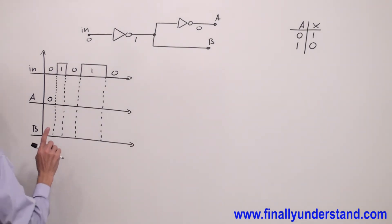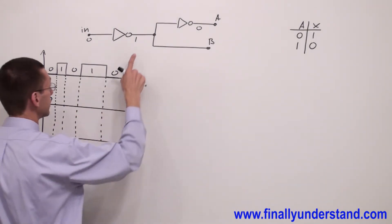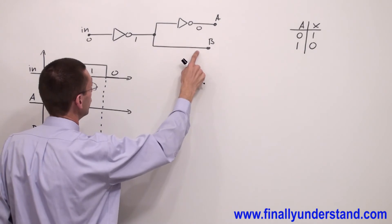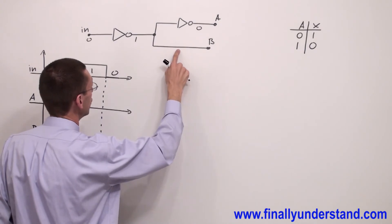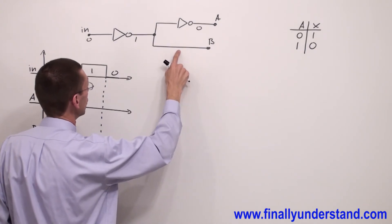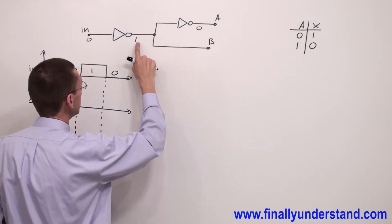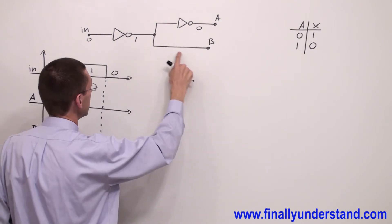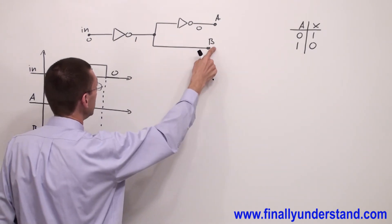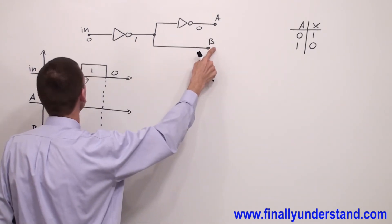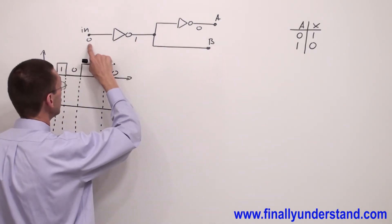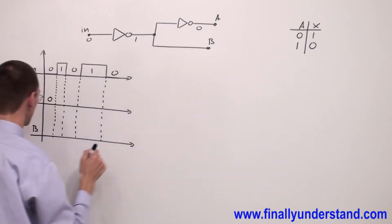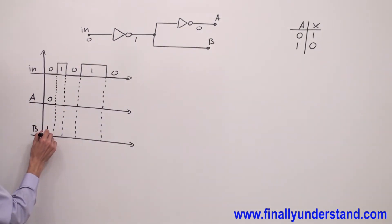Notice that in this part of the diagram we have no inverter. So basically this signal is going to go directly to B. So if I have zero at the input, B is going to be one.